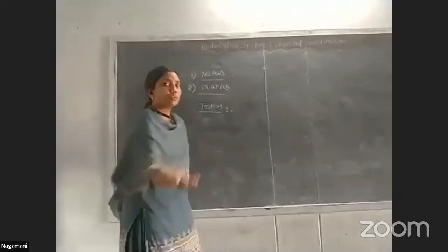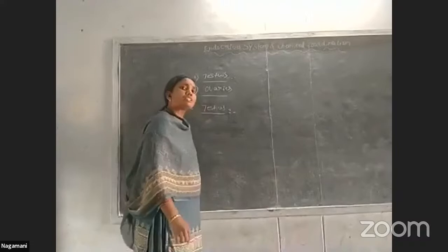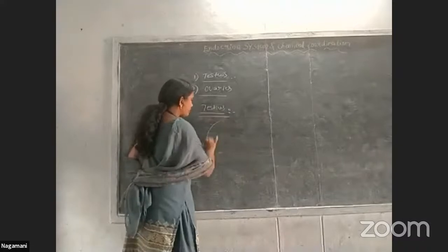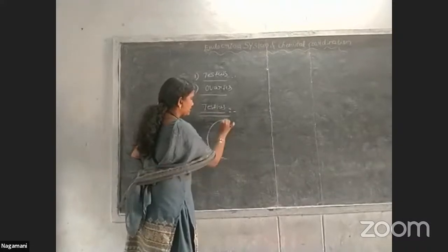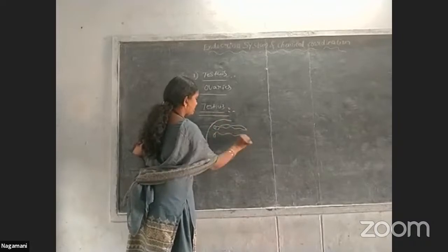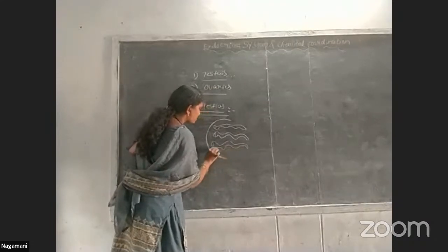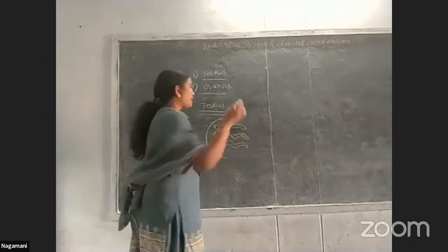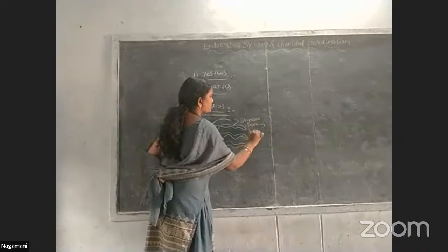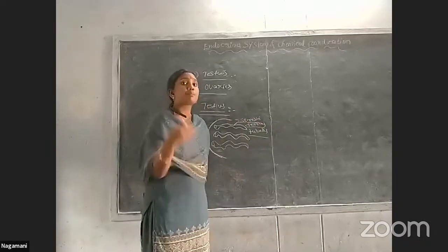You will have learned about this in your previous chapter on the human reproductive system. The testes are the major male reproductive organs. Here is a section of the testes. We can observe foldings in the testes — these are the seminiferous tubules. Their function is to produce and secrete sperm cells.